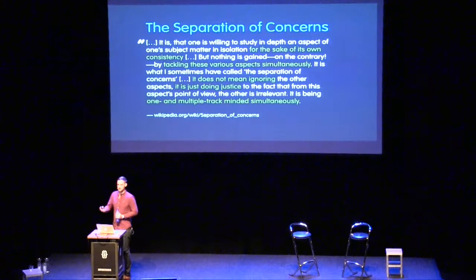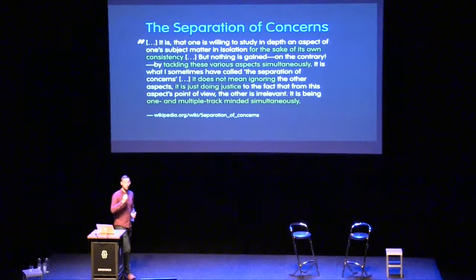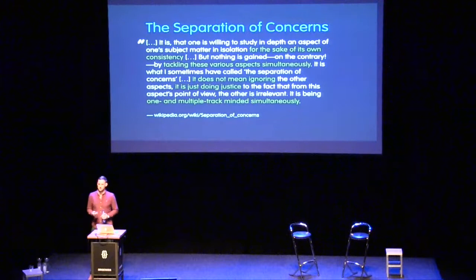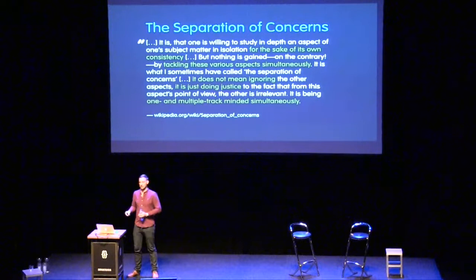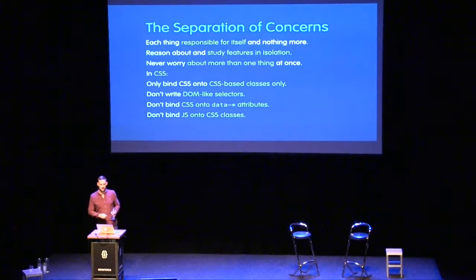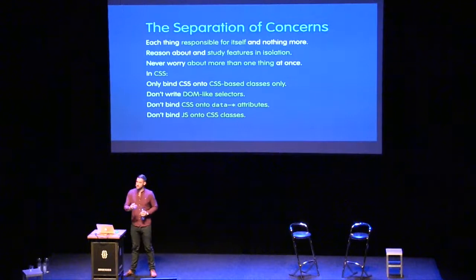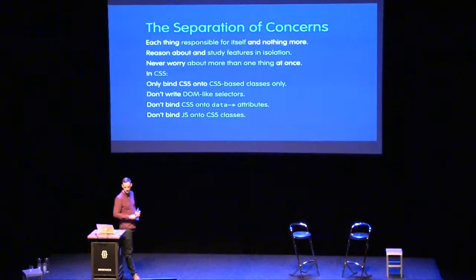Everything should be responsible for itself and nothing more. This means we can study features in isolation and safely make changes to one thing whilst ignoring everything else. Quick examples in CSS: don't bind CSS onto classes that are for JavaScript, so don't have JS-prefixed classes in your stylesheets. Avoid writing selectors that look like DOM trees — `header ul li a`, for example — we're loading our stylesheet with DOM information. Don't bind CSS into data attributes; the data attribute exists to store data, not as a styling hook.